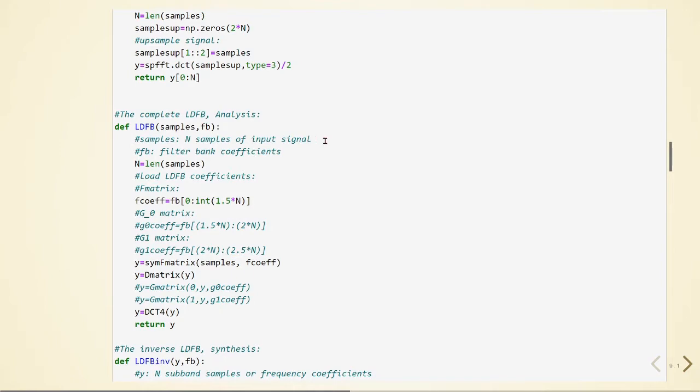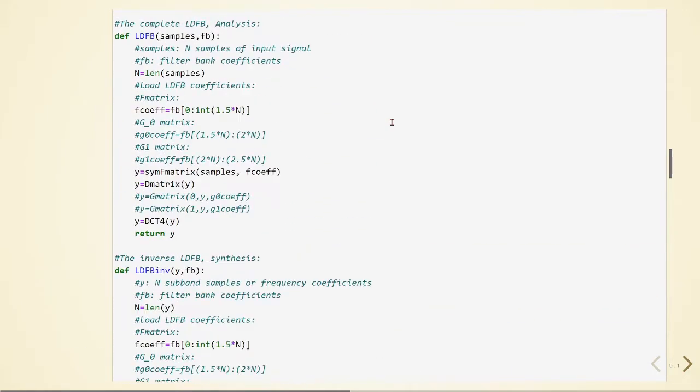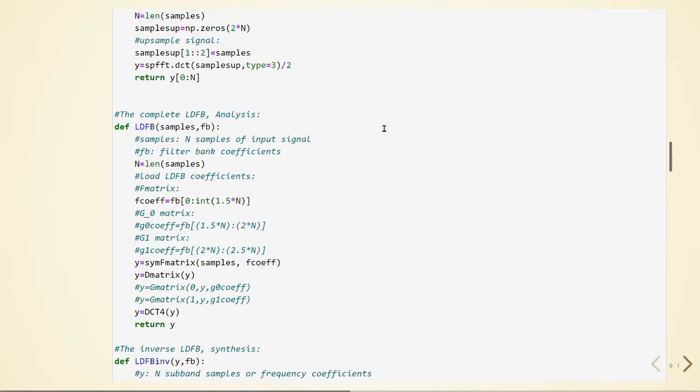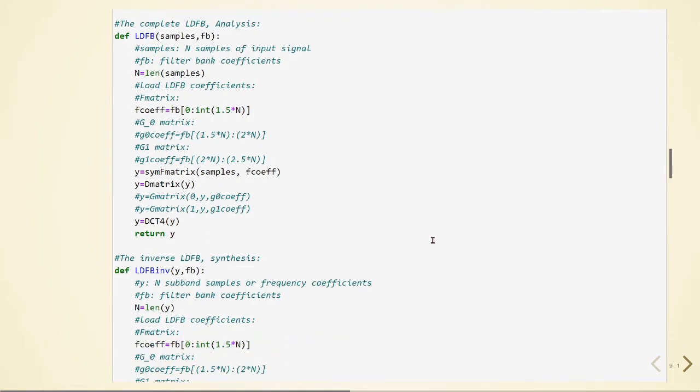In this case the filter bank coefficients will be given by, for example, our sine window. Here we have the F matrix using these F coefficients and here we are using this multiplication of the samples with the F coefficients. Here we have the F coefficients, here we have our delay matrix, then our DCT and we are returning. And we also need the inverse.